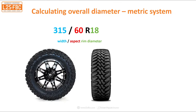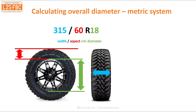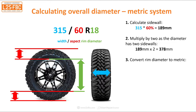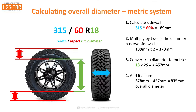Let's look at how to calculate the overall diameter of a tyre using the metric system. Take a 315/60 R18: tread width is 315mm, sidewall is 60 percent of that, and the rim is 18 inches. Step one: calculate the sidewall height — 315mm × 60% = 189mm. There are two sidewalls, so multiply by 2: 189 × 2 = 378mm. Step two: convert the rim diameter to metric — 18 × 25.4 = 457mm.